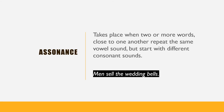Assonance takes place when two or more words close to one another repeat the same vowel sound, but start with different consonant sounds. The same vowel sounds of the short vowel E repeat in almost all the words in the example, excluding the definite article: 'Men sell the wedding bells.' The words share the same vowel sound but start with different consonant sounds — so unlike alliteration, which involves repetition of the same consonant sounds.